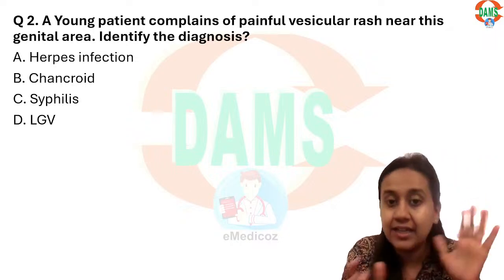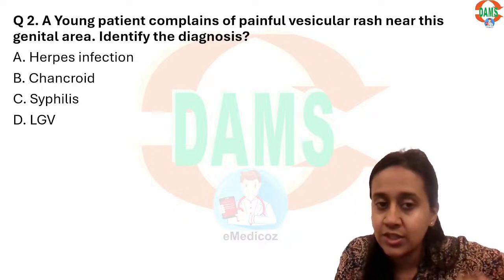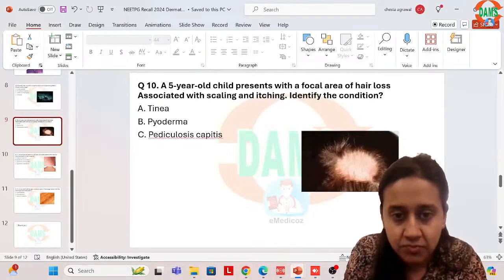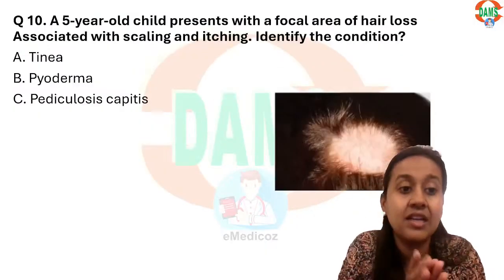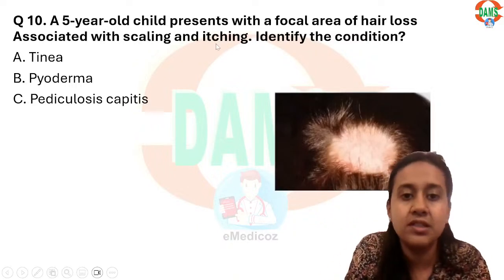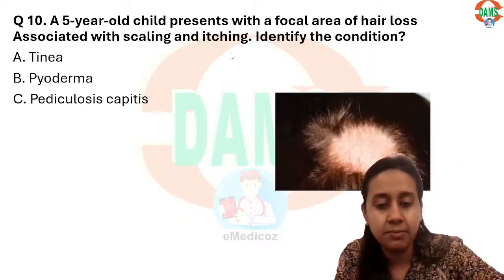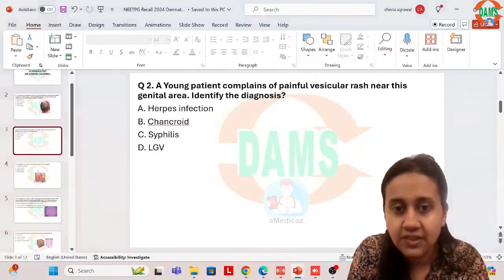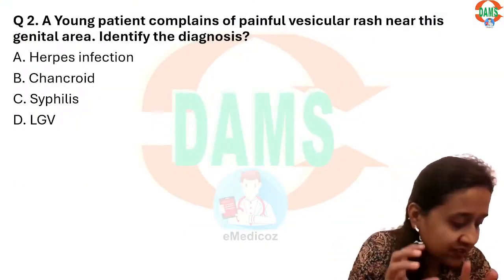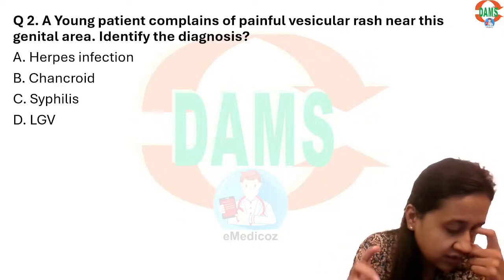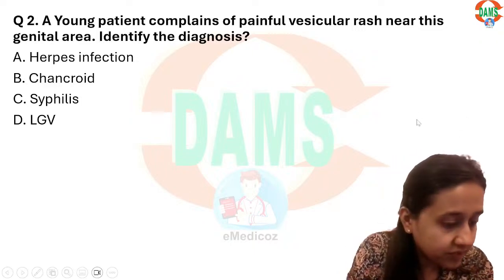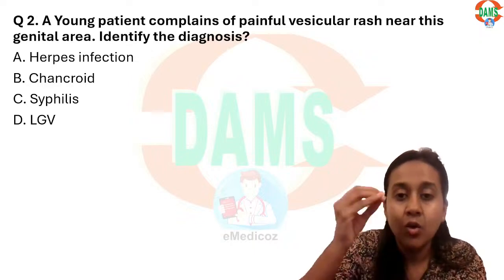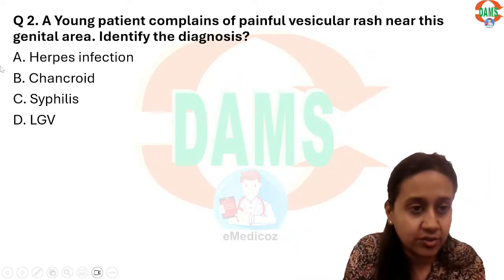Even if alopecia areata was given as an option in the hair loss question, the answer remains tinea because scaling and itching are never seen in alopecia areata. Regarding the genital question: one student said there was a vesicle image given. If vesicles were shown, it has to be herpes because chancroid never presents with vesicles — only painful erosions are seen in chancroid patients. So the answer becomes herpes genitalis.